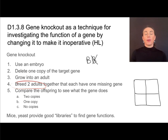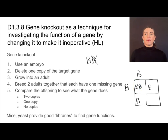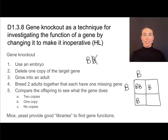We breed two adults together, each missing one copy of the gene. In a Punnett square, one adult has B and then nothing where the other allele should be, and the same with the other individual. When we complete this Punnett square, we find that some offspring have two copies like they should, some have only one copy, and some have no copies. By comparing those individuals and noting physiological differences, we can attribute those differences to the missing gene — and that's how we find the function of the gene. That's called gene knockout.